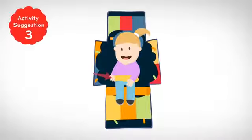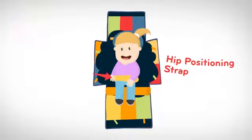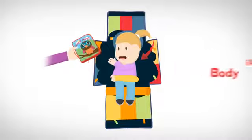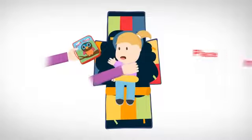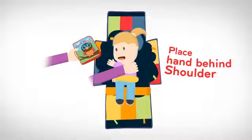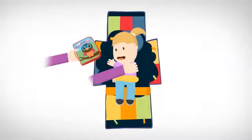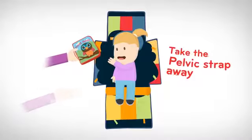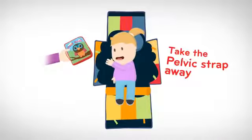I use the hip positioning strap to make sure I stabilise Charlotte's hips, and then I encourage her to reach across her body from either left or right with one of her favourite toys. Sometimes I place my hand behind her shoulder to assist her across if I need to. If I want to make this a little bit more difficult, I take the pelvic strap away and move the toy a little bit further away from her.